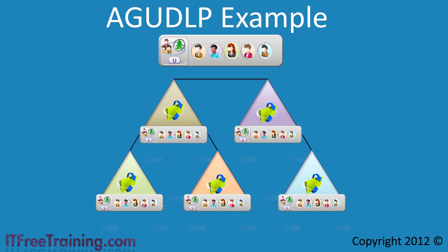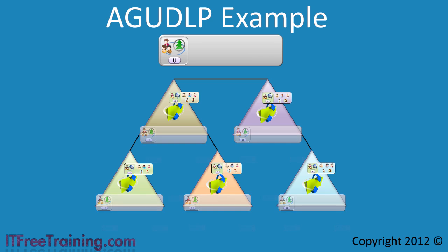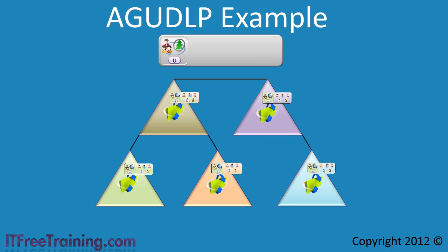Now look at what happens when global groups are added. A global group can be created in each of the 5 domains, allowing an administrator in each domain to have control over the users in that group. Since the group is a global group, administrators from each domain cannot add users from other domains into this group. Users that need to be added will have to go through the approval process for their company.